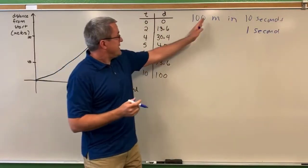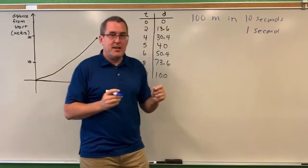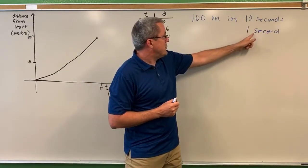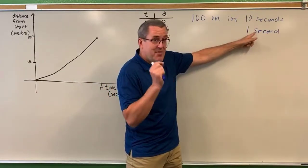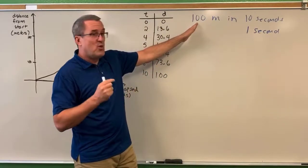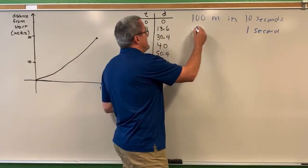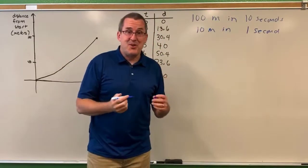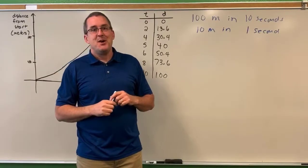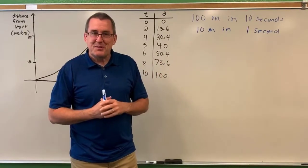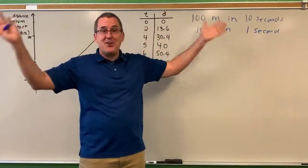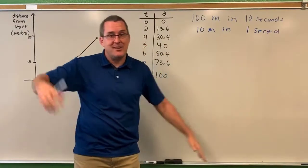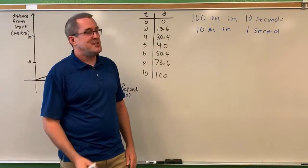We have to look at these two quantities — the distance he ran and the time it took — and think proportionally. We're going to go from 10 seconds to one second: that's one-tenth the time, which means he's going to travel one-tenth the distance. One-tenth of 100 meters would be 10 meters. So we could say this runner ran 10 meters per second — but did he always run 10 meters per second over that entire 10-second period?